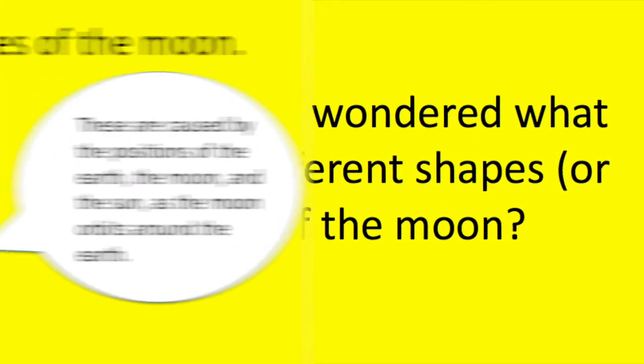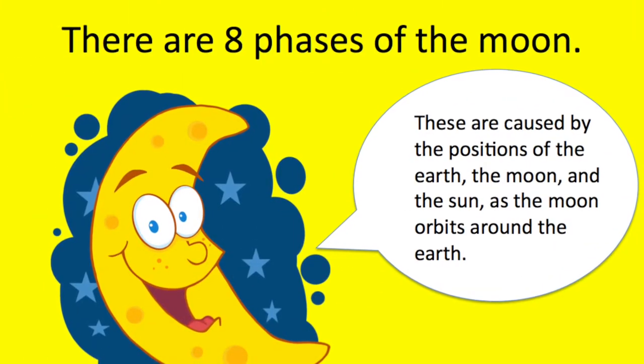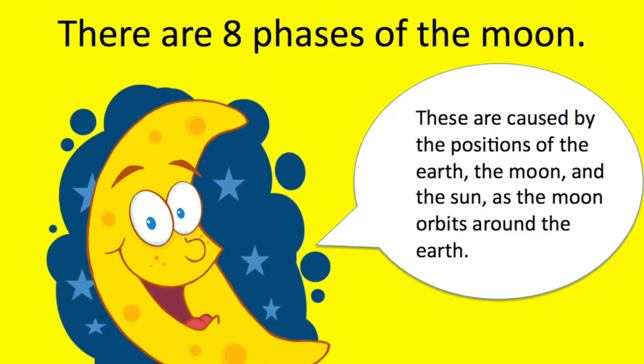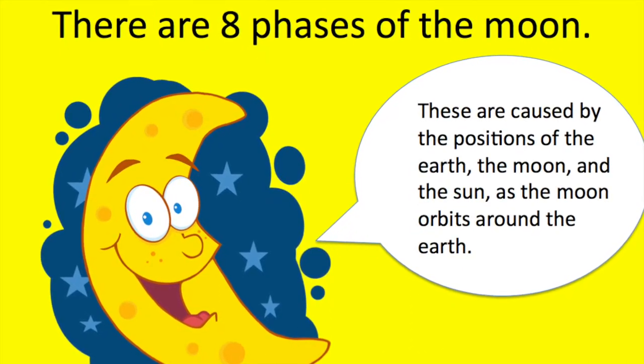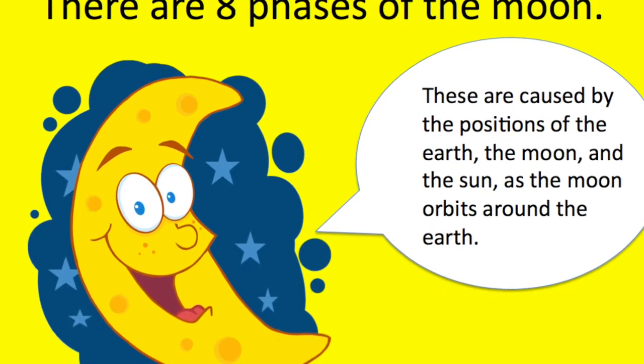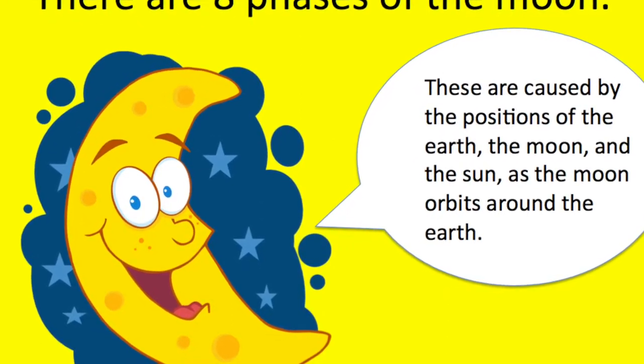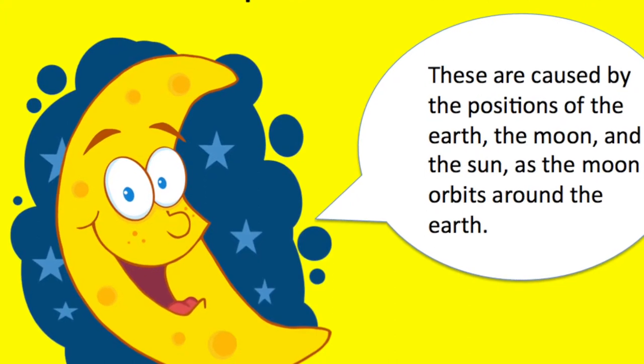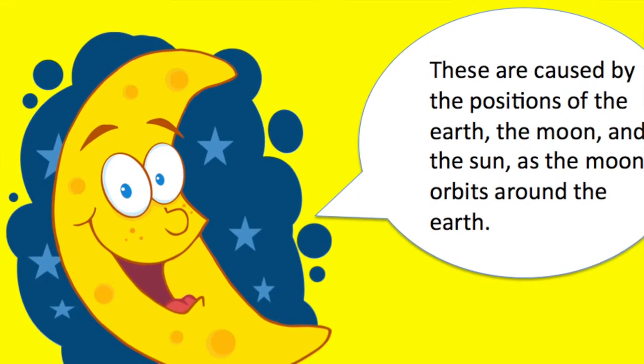There are 8 phases of the moon. These are caused by the positions of the earth, the moon, and the sun as the moon orbits around the earth. The phases that we see from earth are caused by the angle of the moon lighted by the sun.